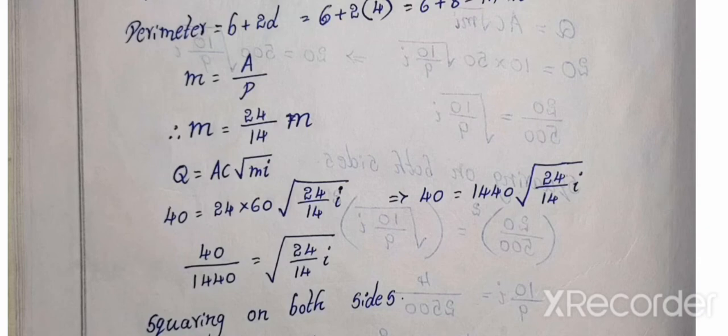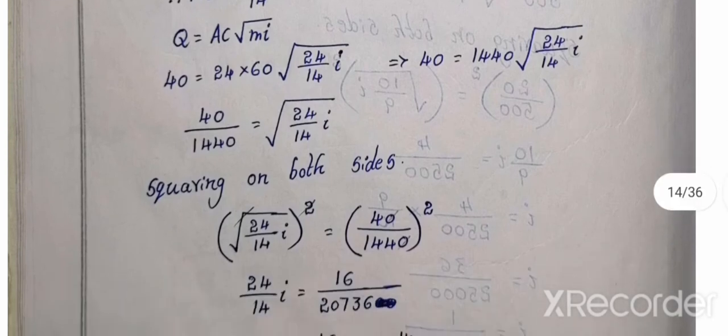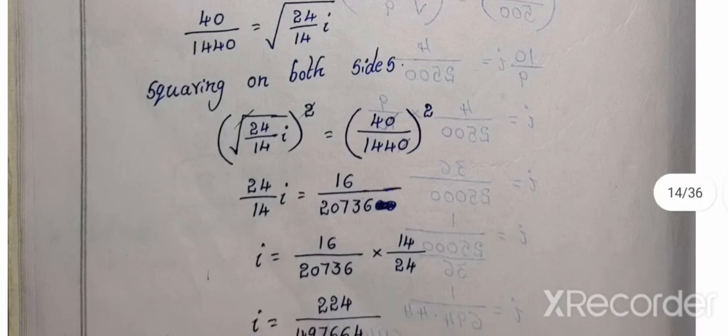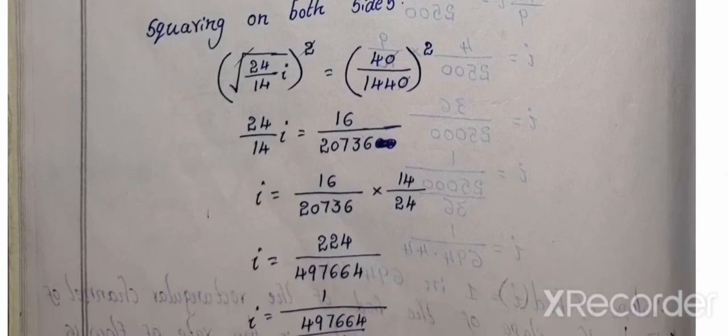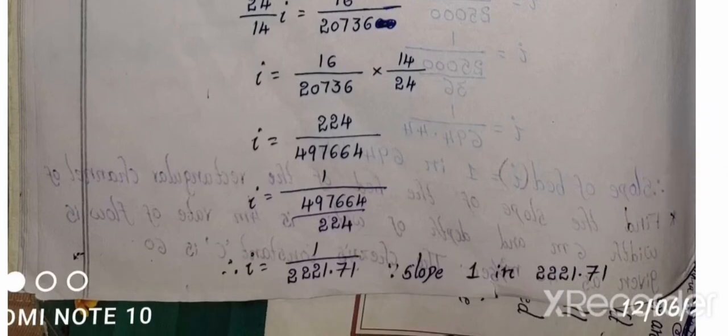A value 24, P value 40. So Q value, formula substitution. Q value 40, A value 24, C value 16, M value 24 by 14, and i. Squaring on both side, squares cancel, square and root cancel. 24 by 14 i, 4 square 16, 144 square 20,736. So i equal to, reverse this, equal to 224 by 497,664. I value, 224 by 2021.